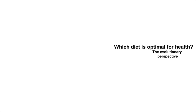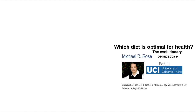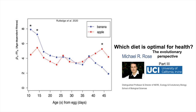Which diet is optimal for health? And more specifically, which diet is optimal for health from the evolutionary perspective? In part three of our conversation with Dr. Michael Rose, we're going to go through data from his lab that compares healthspan for fruit flies raised on an evolutionarily recent diet versus their ancestral diet. Before jumping into the data, it's important to define some terms.